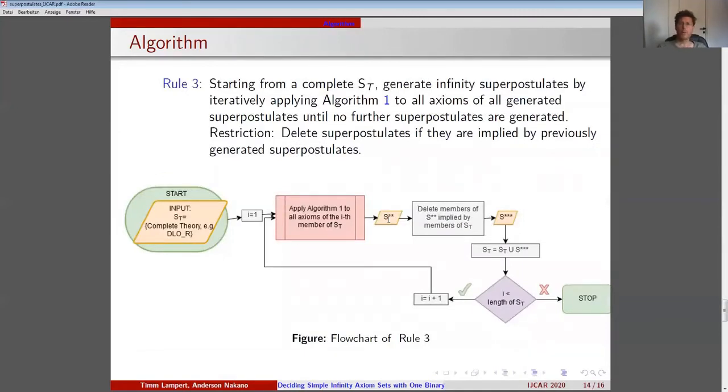We can define our rule 3 as follows. Starting from a complete superpostulate, generate infinity superpostulates by iteratively applying Algorithm 1 to all axioms of all generated superpostulates until no further superpostulates are generated. We make the following restriction to ensure that the generated superpostulates are independent: delete superpostulates if they are implied by previously generated superpostulates.